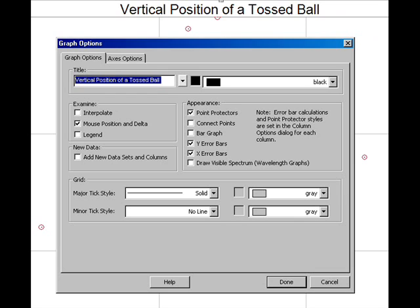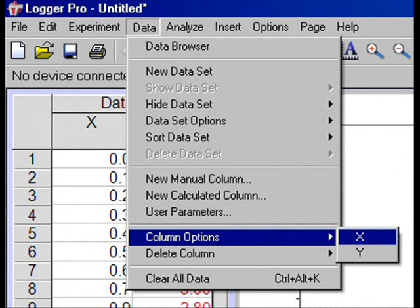We must now label the Horizontal and Vertical axes appropriately. Go to the Data menu and choose Column Options. We'll label the X-axis first. Since the X-axis represents time, I chose time for the name,